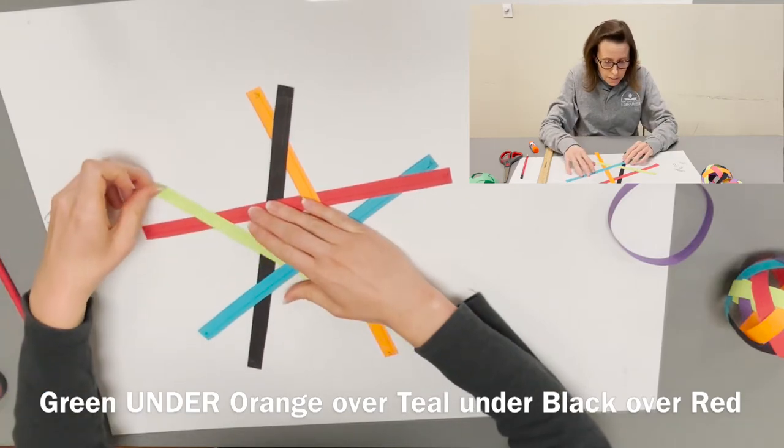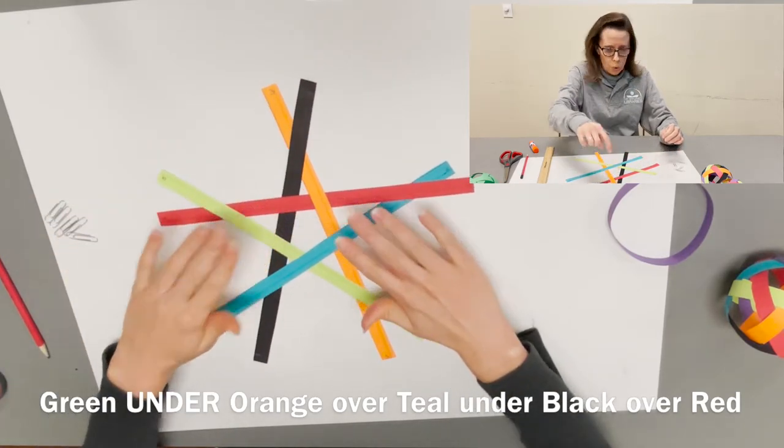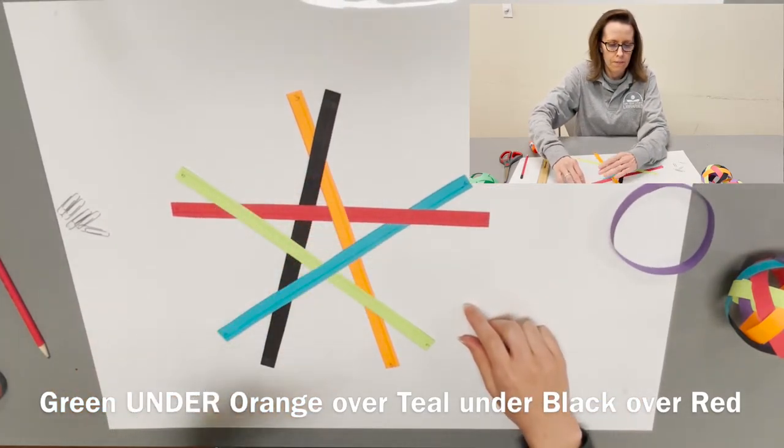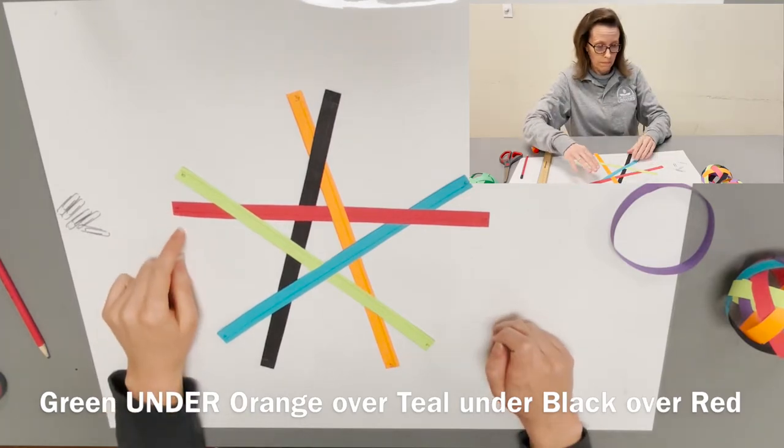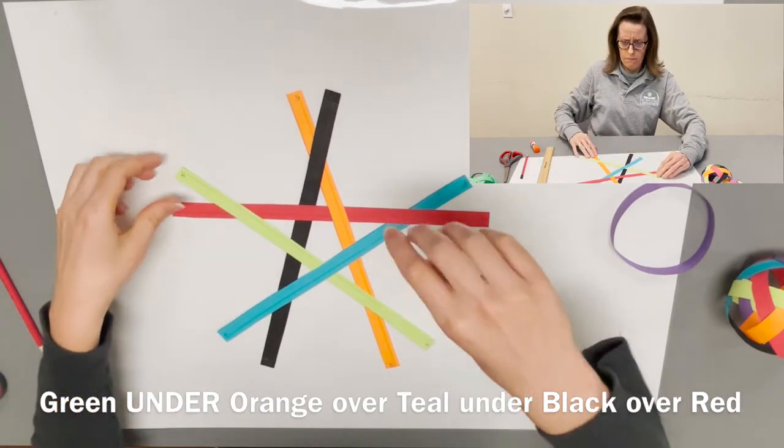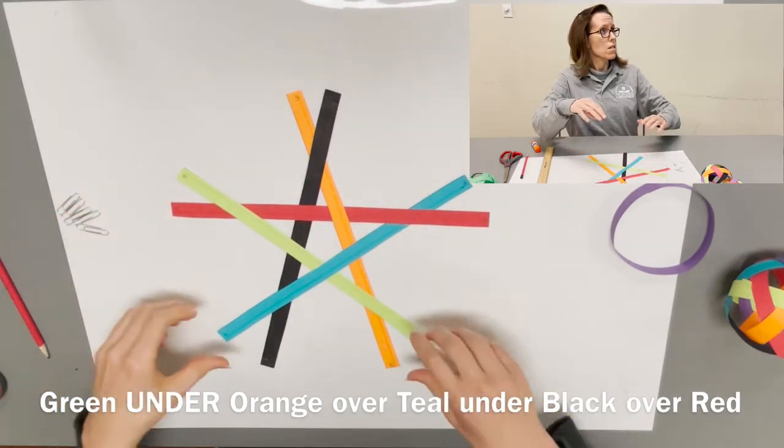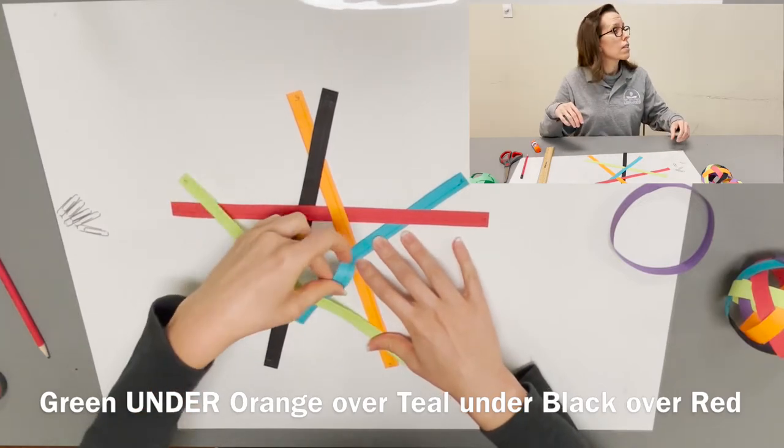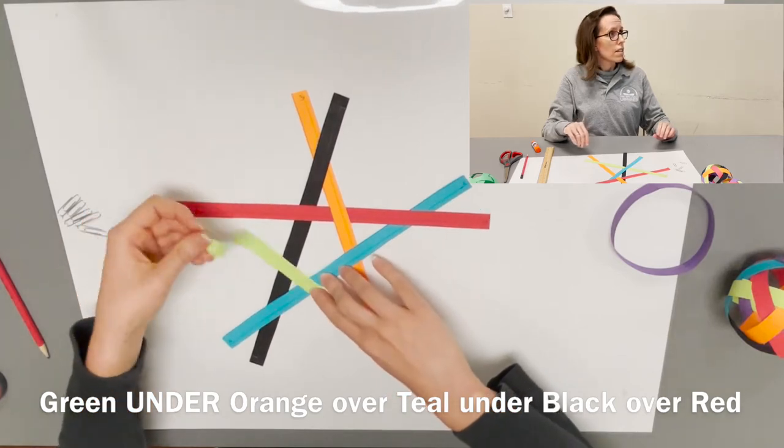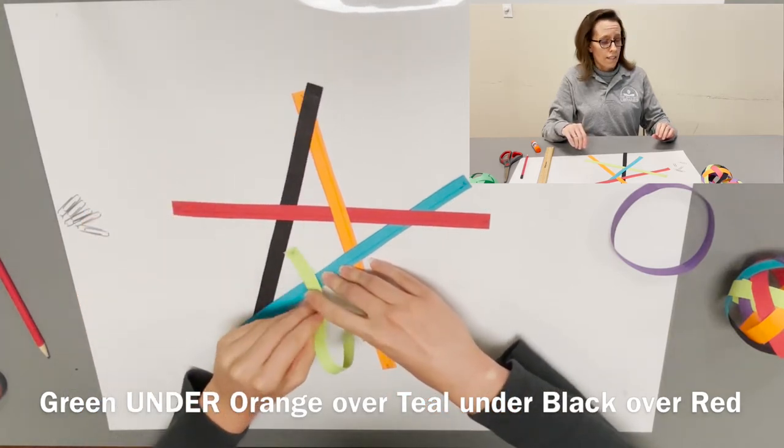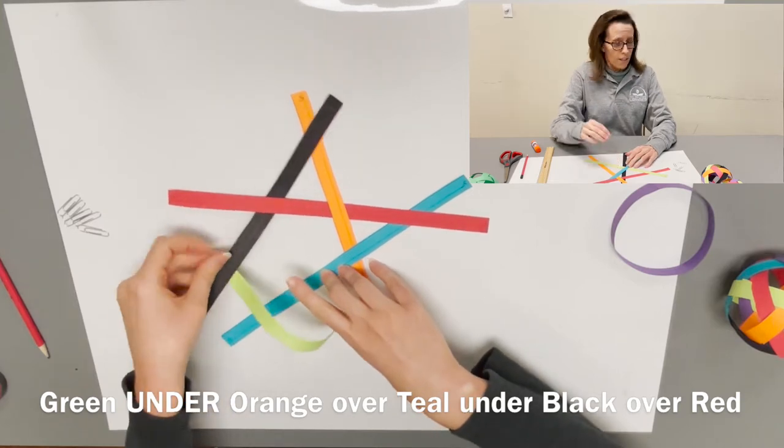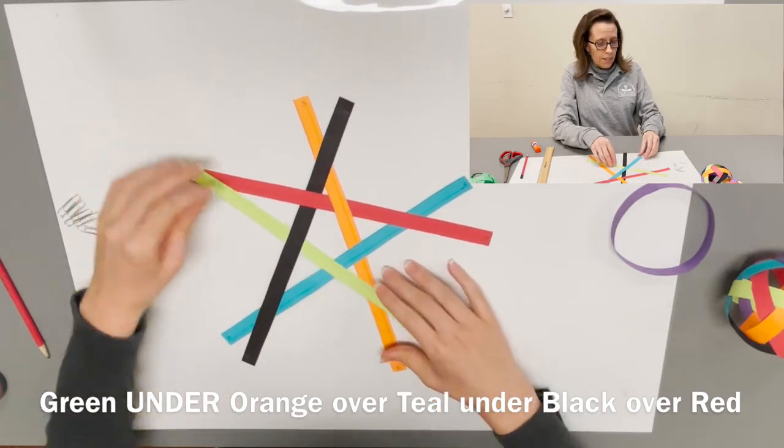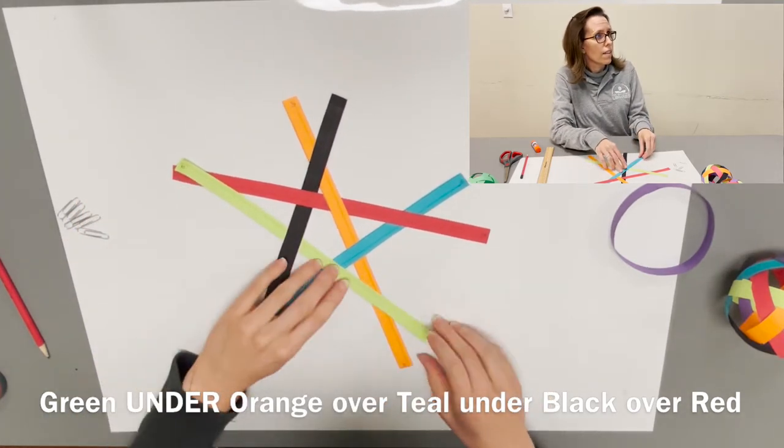Before we do anything else, let's check that we've got everything in the right spot. You should have five points and if you go across each colored strip it should go under, over, under, over.